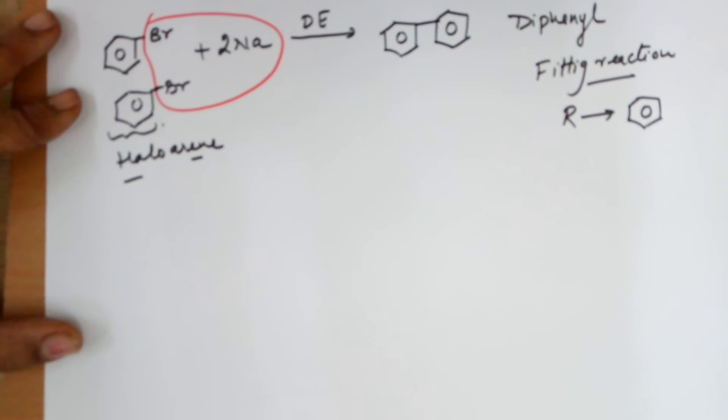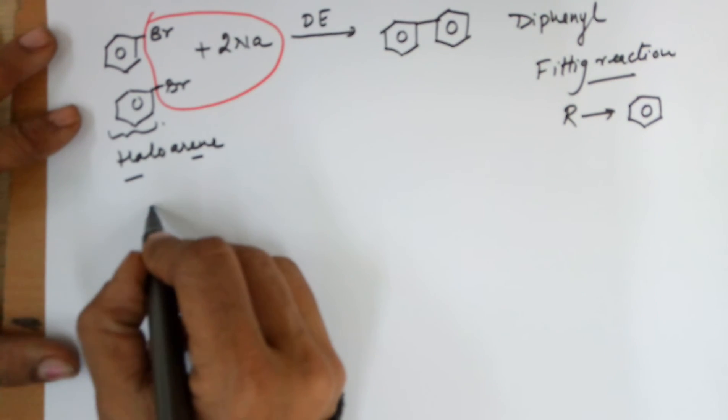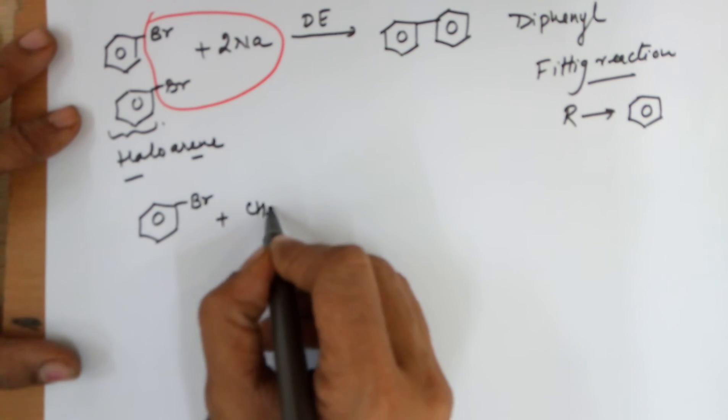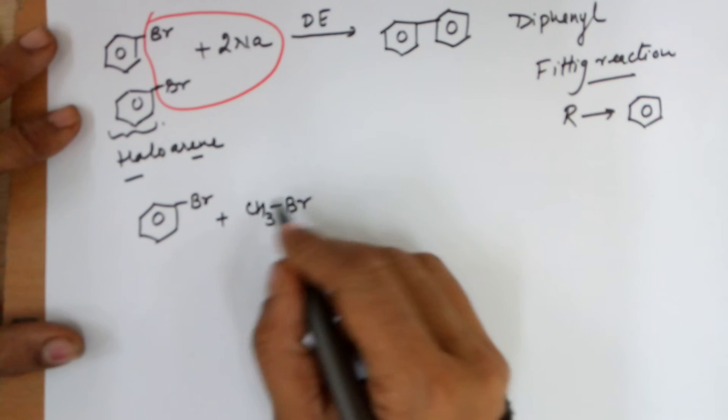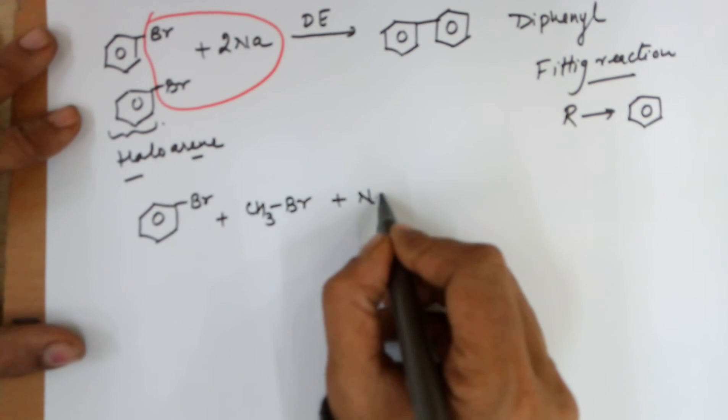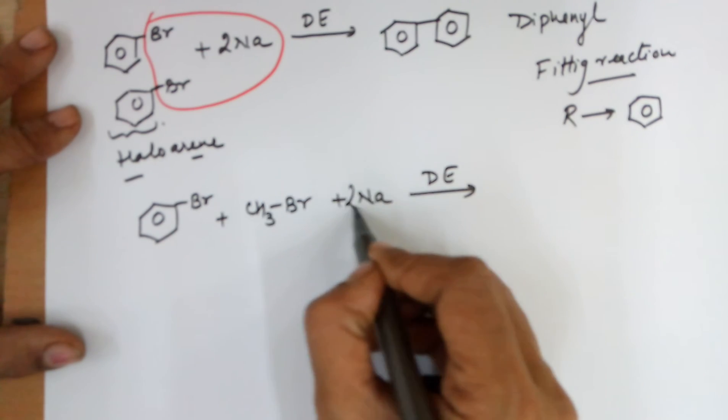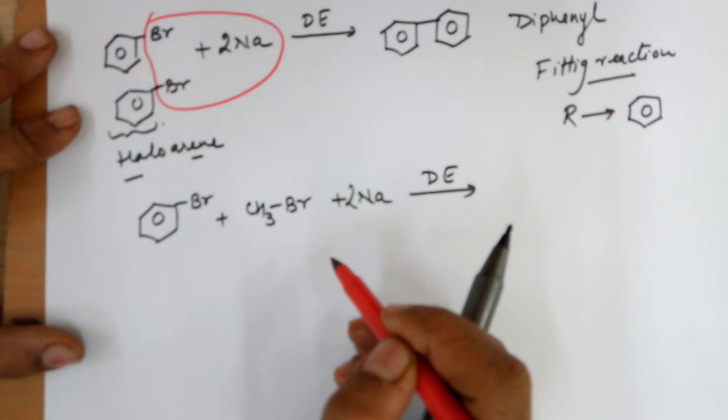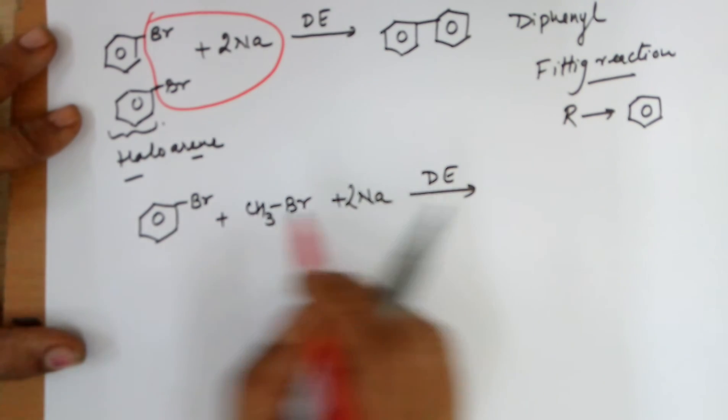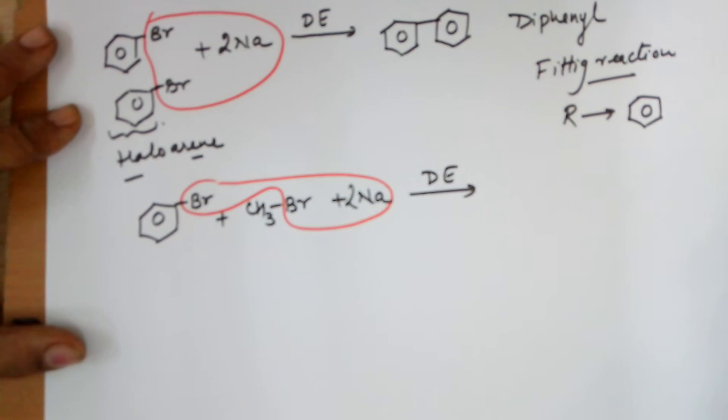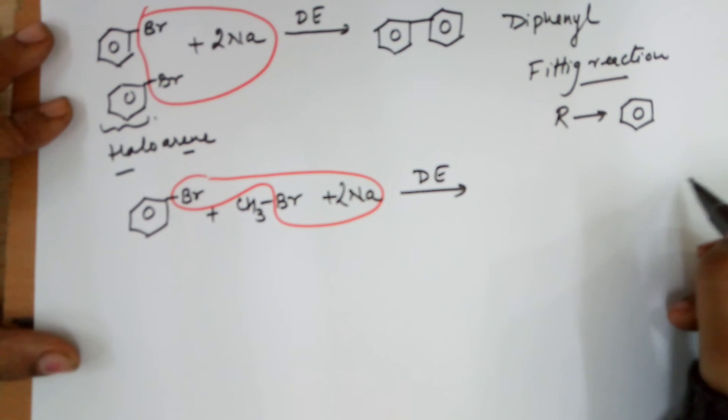What happens if I take another one where I am taking one compound as bromobenzene, the other compound as methyl bromide, in the presence of sodium. Of course dry ether is understandable, you have to take it every time whenever you have sodium. Again the sodium metal will take away the two bromines from the two reactants, leading to the byproduct of sodium bromide.